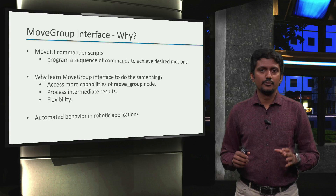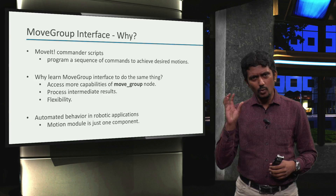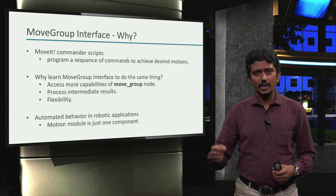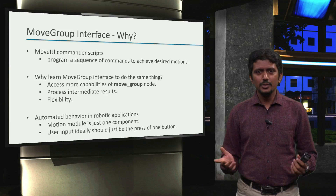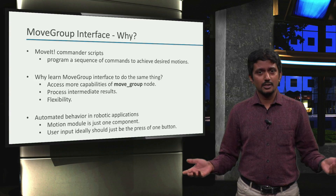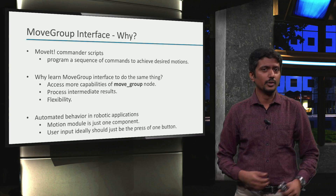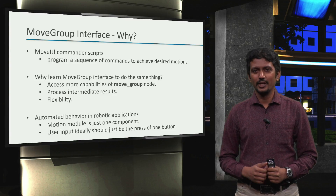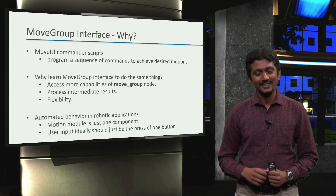Additionally, in the context of automated behavior design in robotic applications, the motion module is just one component among many others. Requiring the user to enter commands to get things moving will be cumbersome. Ideally, the user input should be just the press of a button that starts the entire robotic application, and then you sit back and watch the robot do its thing. A practical advice here is also to keep the emergency stop nearby, just in case.